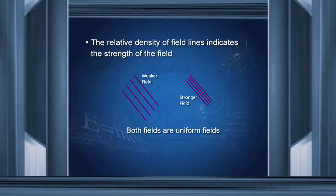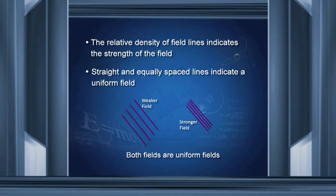The relative density of field lines dictates the strength of the field — denser lines indicate a stronger field. Straight and equally spaced lines indicate a uniform field. Lines that are parallel and equally placed represent a uniform magnetic field.